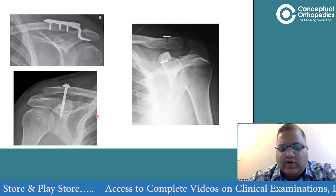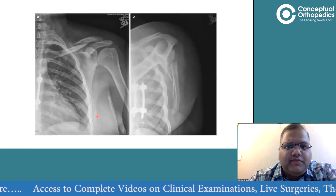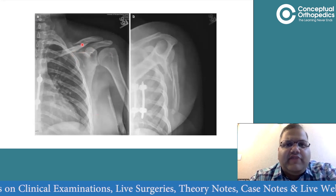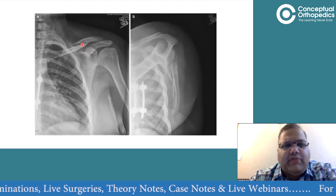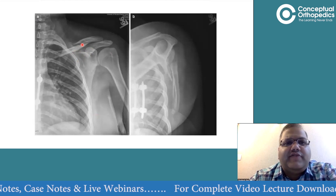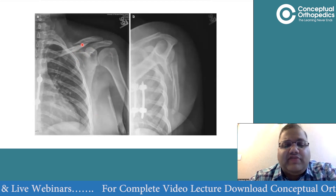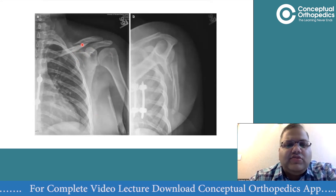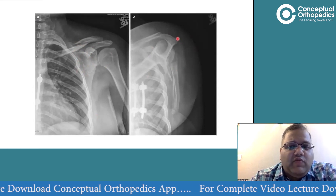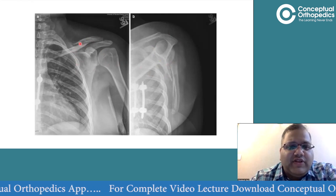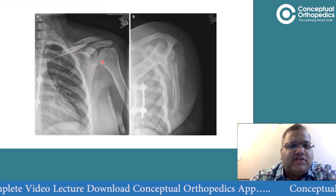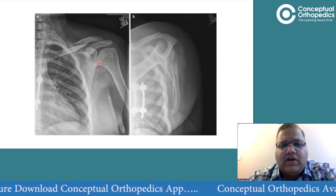When given an X-ray showing a clavicle fracture, do not immediately focus only on the clavicle. Clavicle fractures alone are too simple to frame sufficient OSCE questions. Always look at the scapula as well - you may only be given one view where the combined injury is not obvious. A clavicle fracture combined with a scapula fracture constitutes a 'floating shoulder,' which is a hot topic in both theory and OSCE exams.